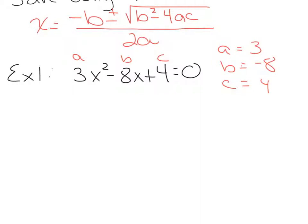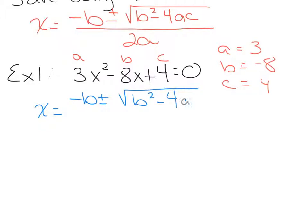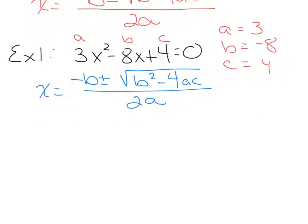It's always a good idea to rewrite the formula before you use it. So x equals negative B plus or minus the square root of B squared minus 4AC, all over 2A. Then I'm going to take these coefficients A, B, and C and fit them into the formula and simplify to find what x equals.